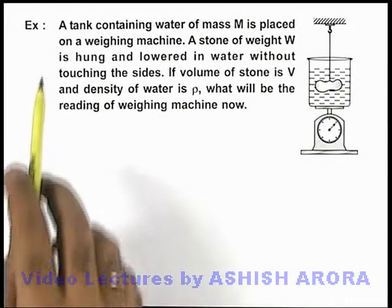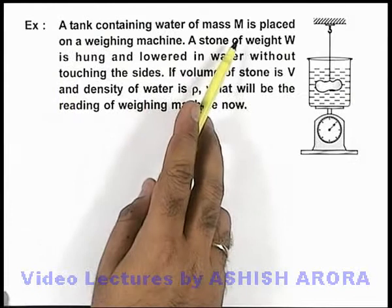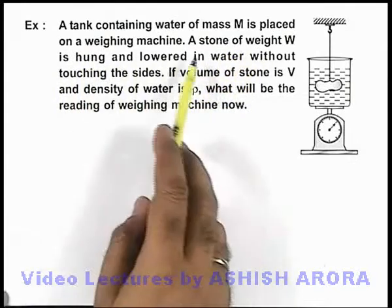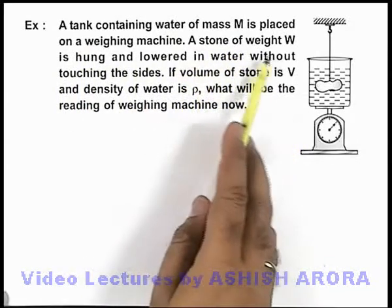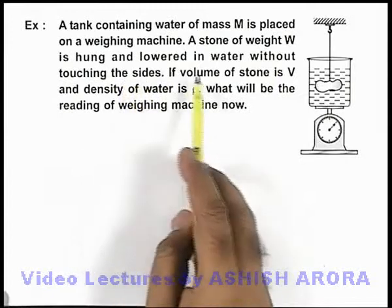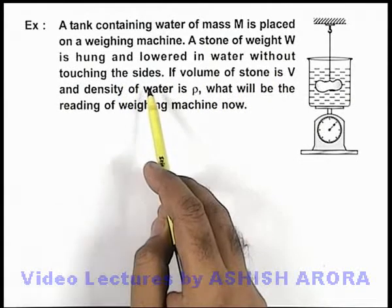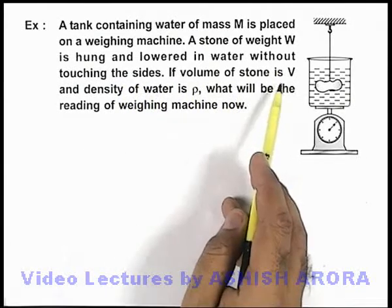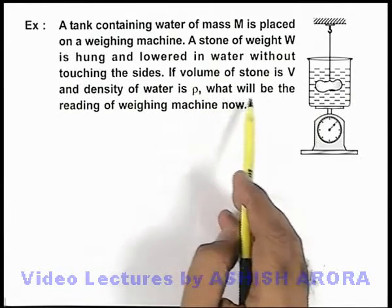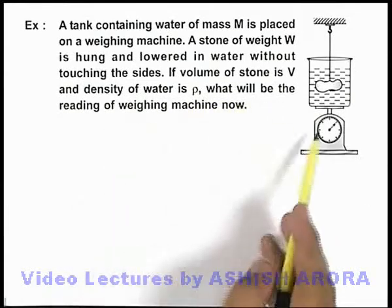In this example, we are given that a tank containing water of mass M is placed on a weighing machine, and a stone of weight W is hung and lowered in water without touching the sides of the container. If volume of stone is V and density of water is ρ, we are required to find what will be the reading of weighing machine now.